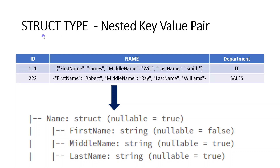When we define using struct type, we should specify the number of keys and it cannot be changed. This particular name field can contain first name, middle name, and last name. The value of this column must have exactly three fields. We cannot give only first name and last name, and we cannot add any extra column on top of this. It must accept three key-value pairs — first name, middle name, and last name. That is the structure of this particular field defined using struct type.